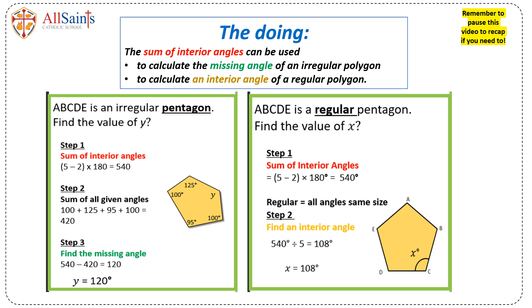In the second example, you have a regular pentagon, which means all the sides are the same length and all the angles are the same size. So we take the sum of interior angles of 540 degrees and divide it by 5 to give you each interior angle of 108 degrees.